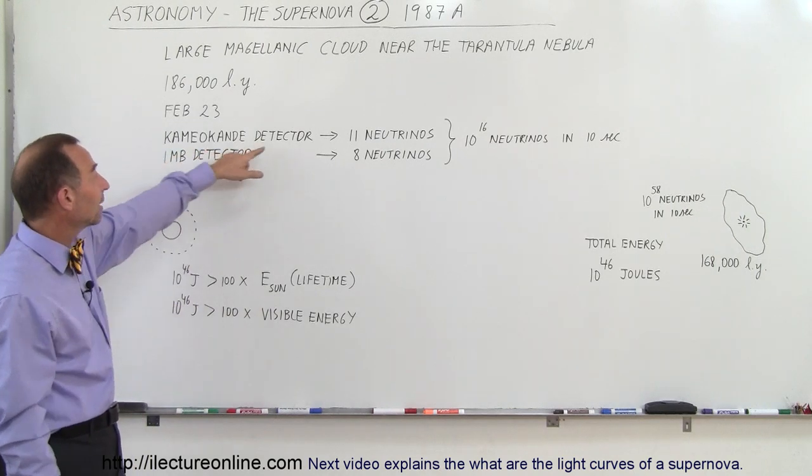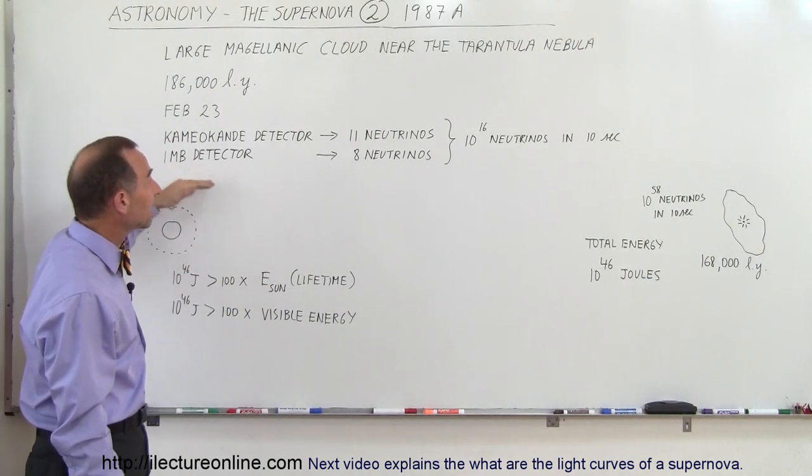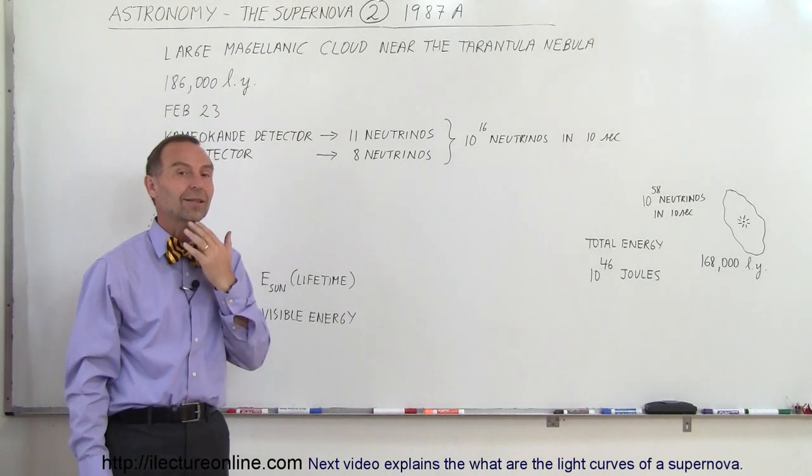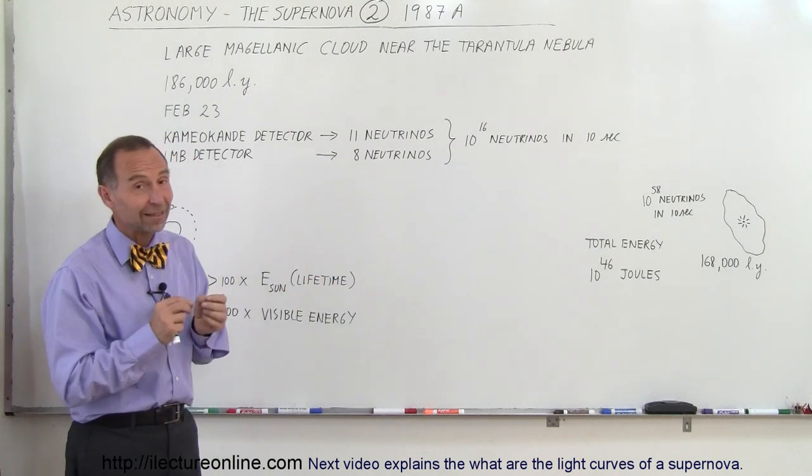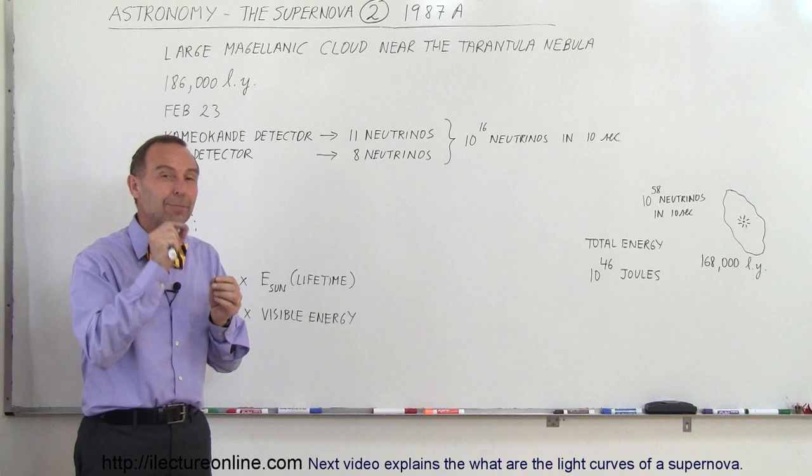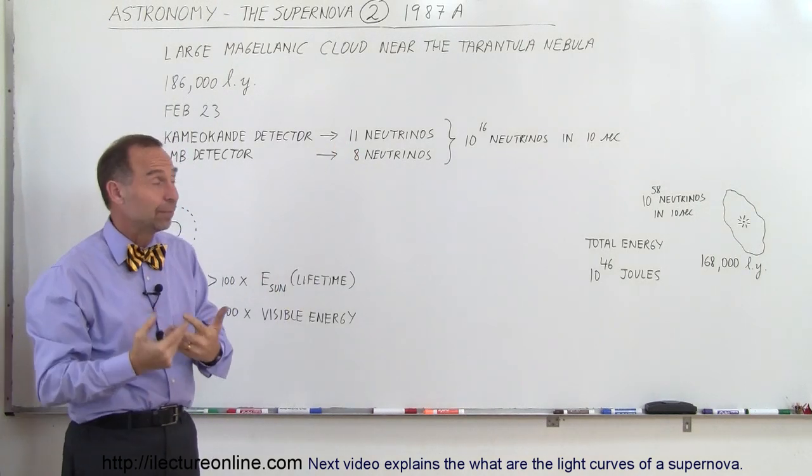In the Kamiokanda detector, 11 neutrinos were detected in a 10-second period, and in the IMB detector, about eight neutrinos were detected. You may say, wow, 11-8, what's the big deal? But it turns out that only a very tiny percentage of all the neutrinos that go through the detector are actually detected.